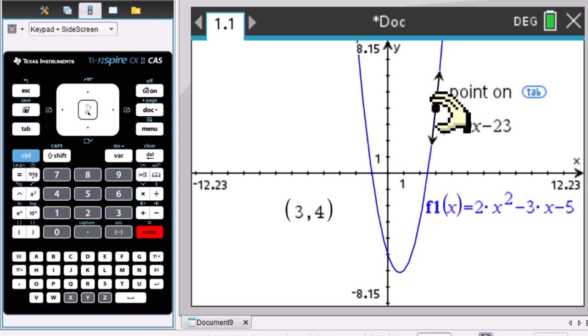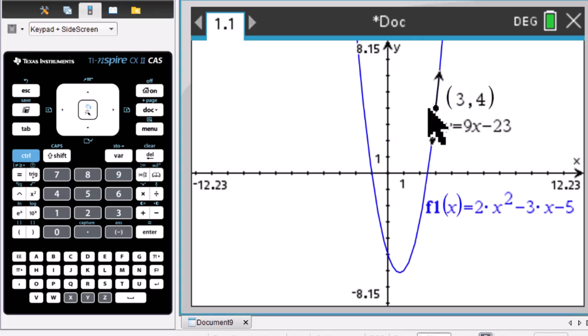You will get this point, 3, 4, and tangent line equation is y equals 9x minus 23.